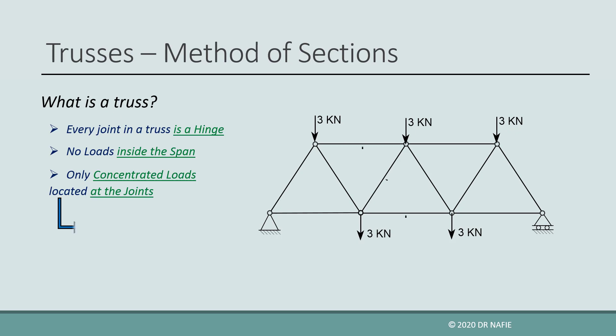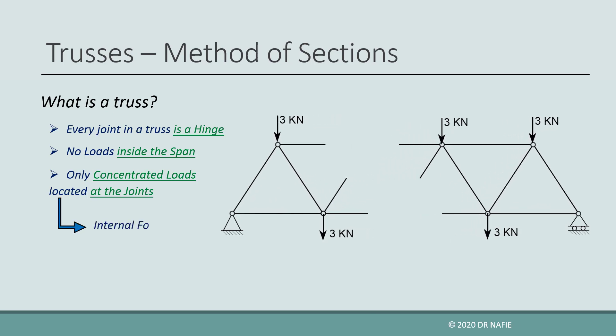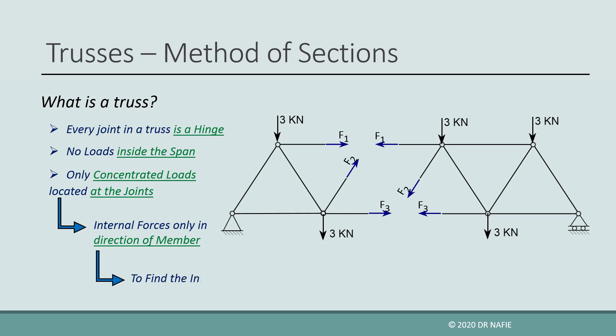So if we cut the truss into two parts, only one internal axial force will appear at each cut member. The method of sections is based on cutting the truss into two parts, then applying the equilibrium equations on one of the parts to evaluate the unknown internal forces. Because we have only three equilibrium equations, the cut section should only have three unknown internal forces.